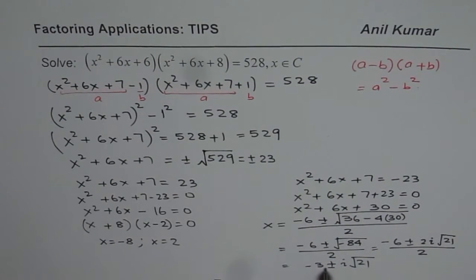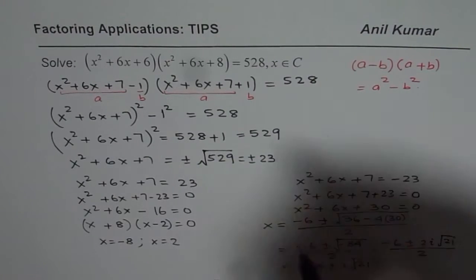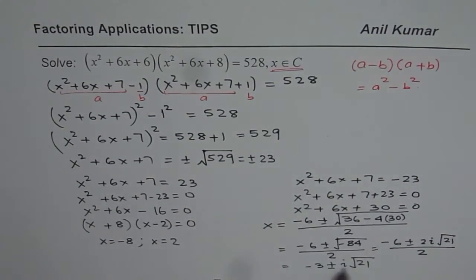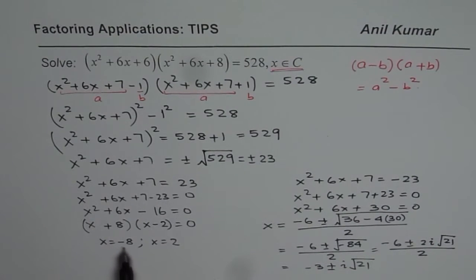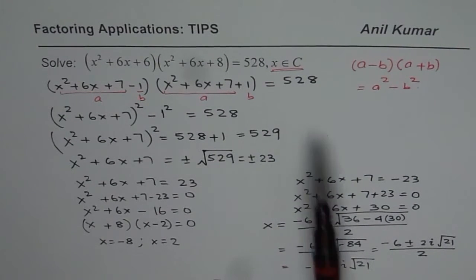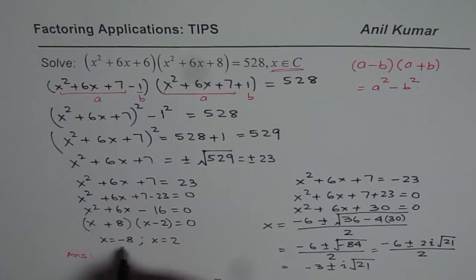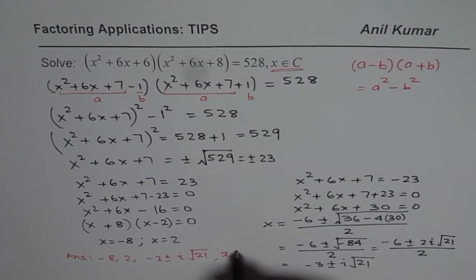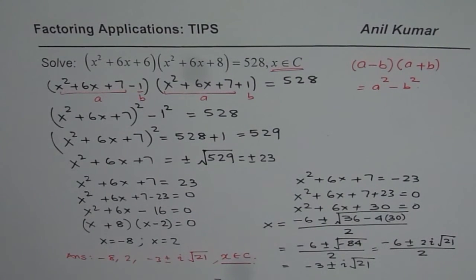These are two additional solutions but they are complex solutions. So for those working in complex numbers, there are four solutions: minus 8, 2, and the conjugate complex pair minus 3 plus or minus i square root 21. If working with real numbers, there are only two real solutions. Our final answer is x equals minus 8, 2, and minus 3 plus or minus i root 21. I hope that helps. Thank you and all the best.